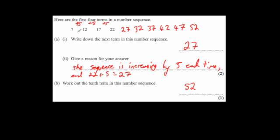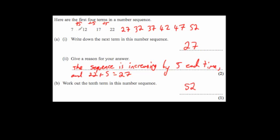So the tenth term is 52. Another way to do it is to work out the nth term of the sequence. The multiples of 5 go 5, 10, 15, 20, so the nth term is 5n + 2. For the tenth term: 5 times 10 is 50, plus 2 is 52. But the simplest way for something like 10 terms is just to carry on the sequence.